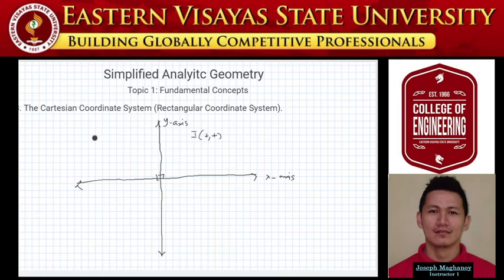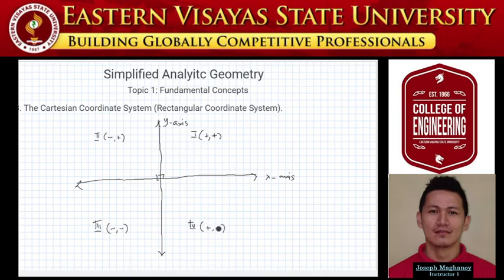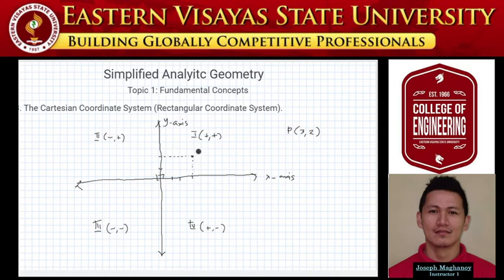The two lines intersect at a right angle, forming four quadrants. The first quadrant has sign positive-positive. The second quadrant has sign negative-positive. The third quadrant has negative-negative. The fourth quadrant has positive-negative. For example, if we have the point (3, 2), we go 1-2-3 on x and 1-2 on y. A coordinate is composed of x and y values.